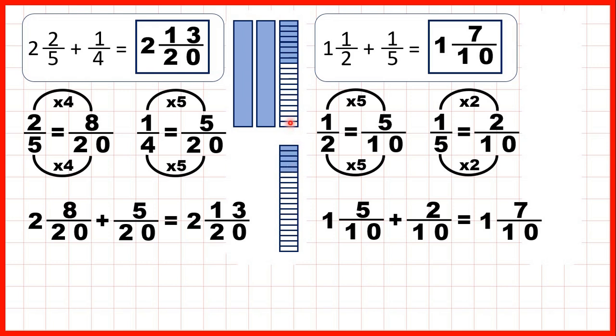So now that our fraction bars are split up into the same number of parts into 20 parts or 20ths, we can put them together, and that gives us 2 wholes and 13 20ths as our answer.